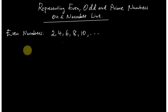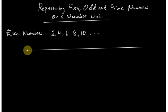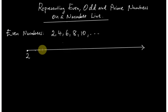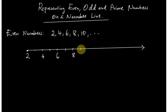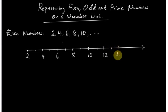To represent even numbers on a number line, you draw your number line like this. This is your starting point and the numbers move this way. Even numbers start from 2, then we have 4, then 6, then 8, then 10, then 12, then 16, and so on. This is how we represent even numbers on a number line.